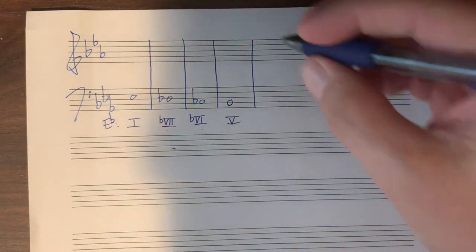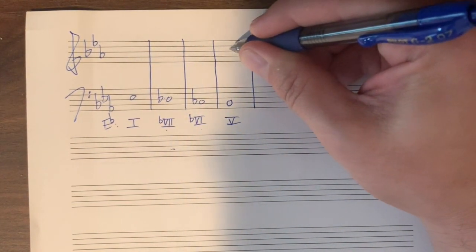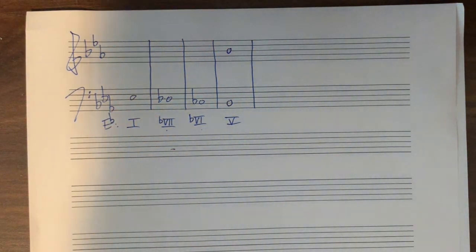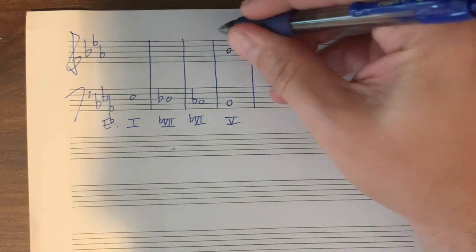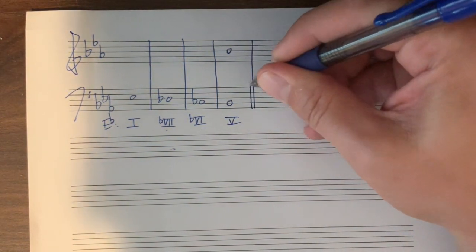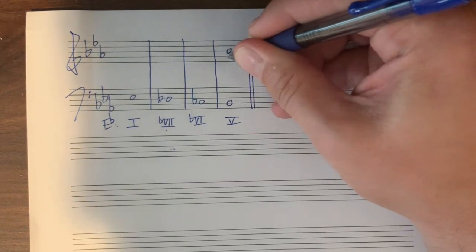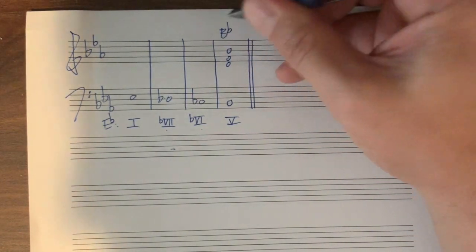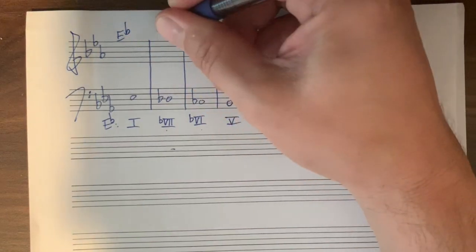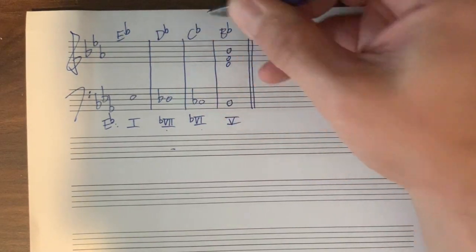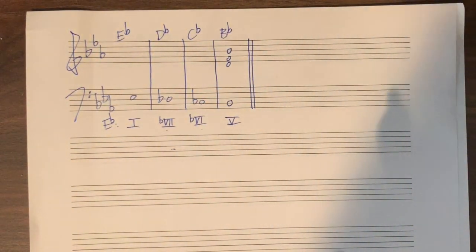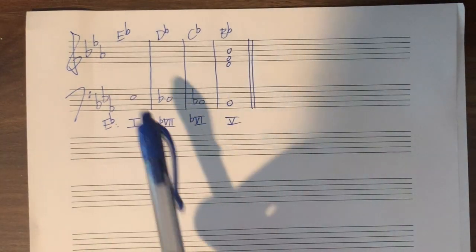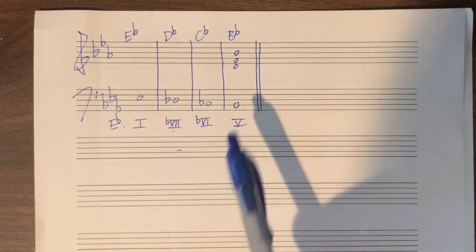The top note up there is a B flat. What happens here is we have a B flat chord. If you don't know your Roman numerals, these are basically the chords: E flat, D flat, C flat, B flat.